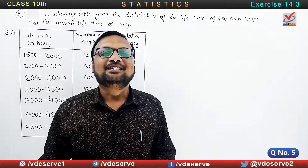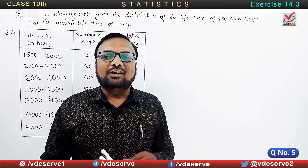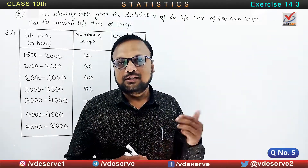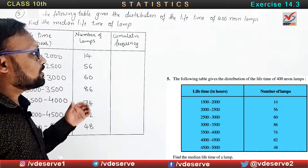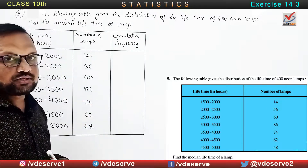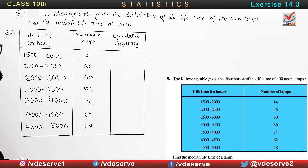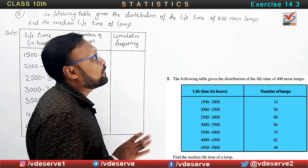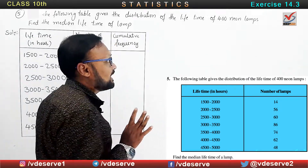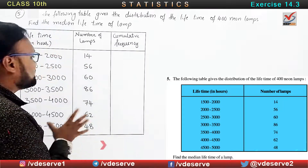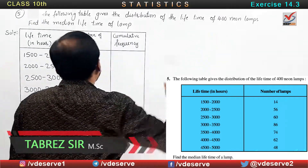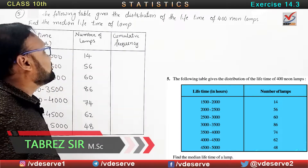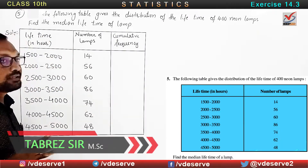Hello! Now exercise 14.3, that is statistics. Already we have solved the questions from 1 to 4. Now the next one is question number 5. Find the following table giving the distributions of the lifetime of 400 neon lamps. Find the median lifetime of the lamp.